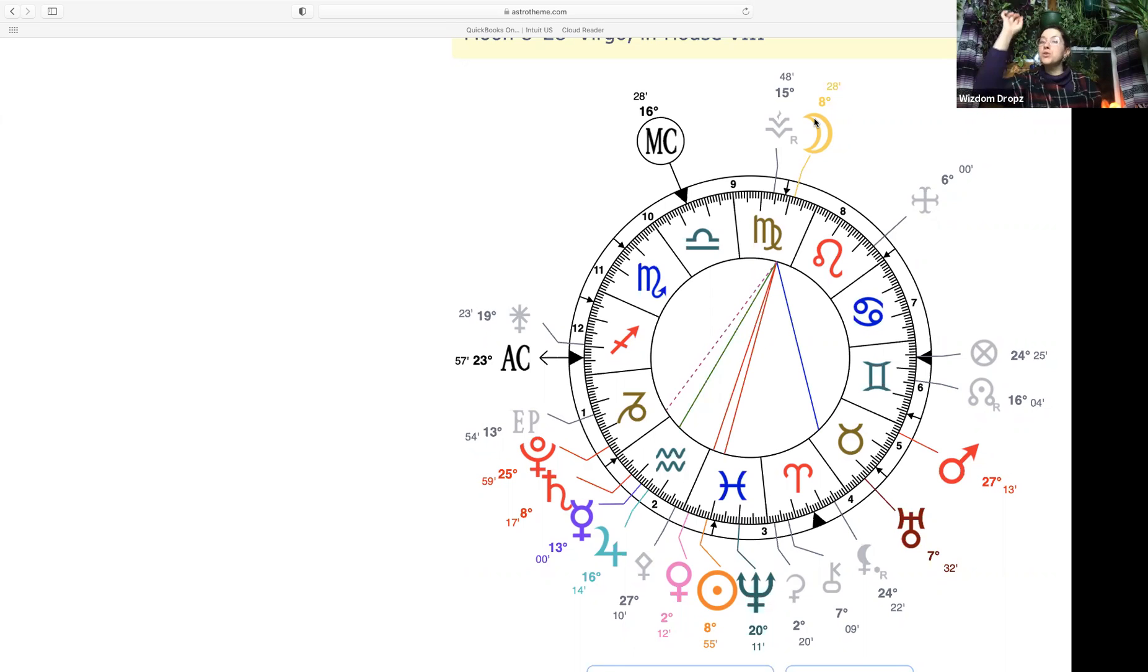Virgo is an Earth sign. Earth people do not F around. Earth people do not got time for BS that don't hold up. If it ain't sturdy, it ain't happening in an Earth person's world. If you're a Taurus, a Capricorn, or a Virgo, you know exactly what I'm talking about. Virgo is Mercury ruled, so it's the solutionist of things holding up, and the moon is our collective consciousness.